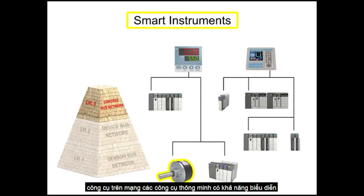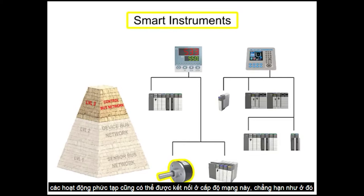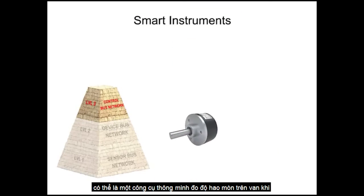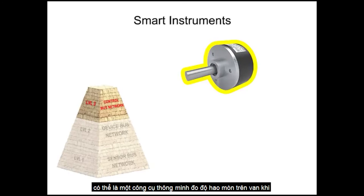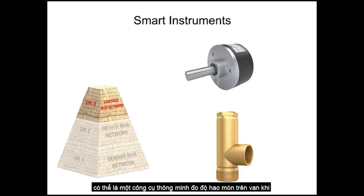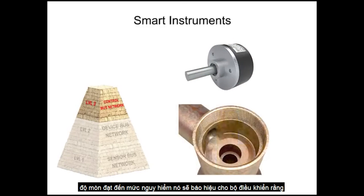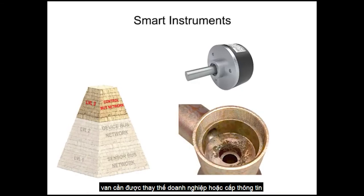Smart instruments capable of performing complex operations can also be connected at this network level. For instance, there might be a smart instrument that measures wear and tear on a valve. When the wear reaches a dangerous level, it will signal the controller that the valve needs to be replaced.